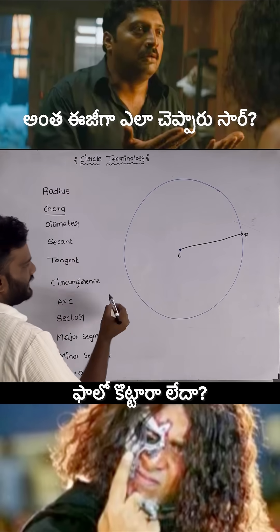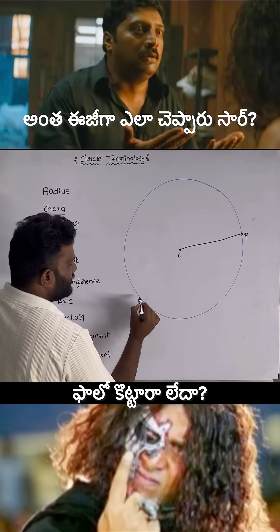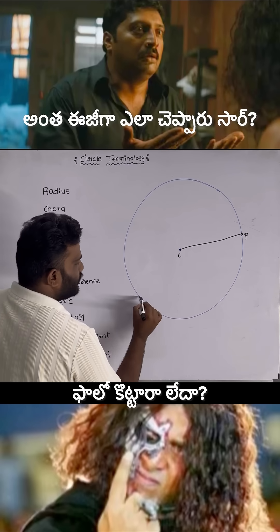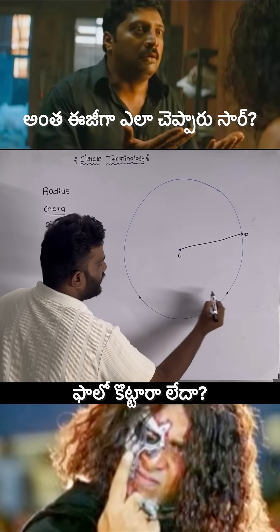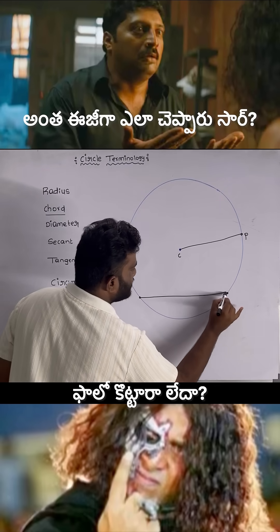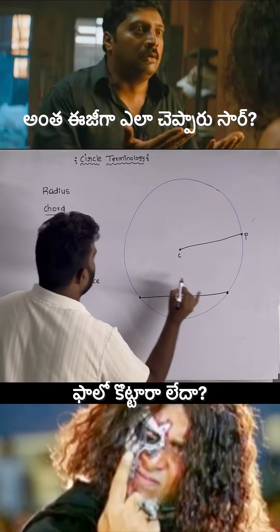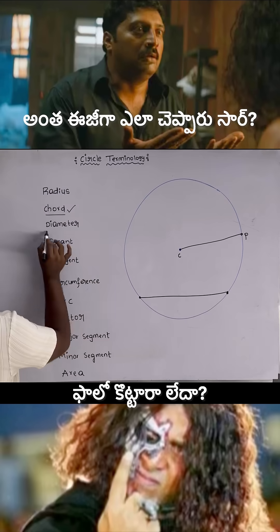Chord: it is a line segment which has two endpoints on the circle. Joining these two points is a line segment that is called chord.